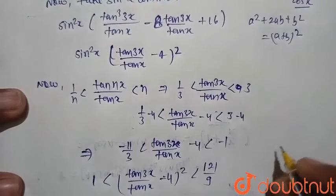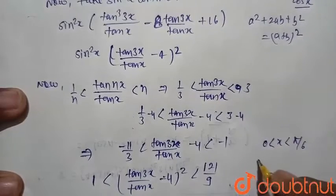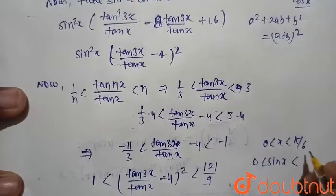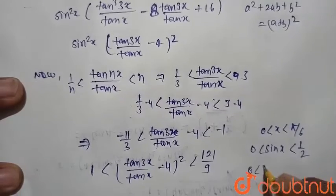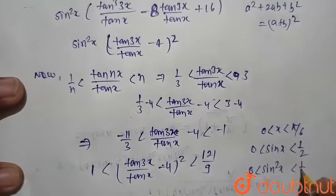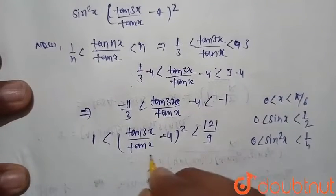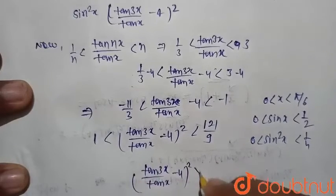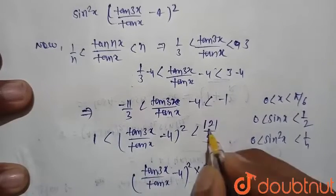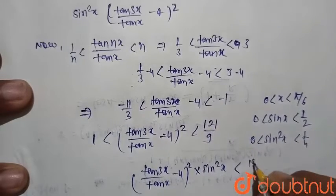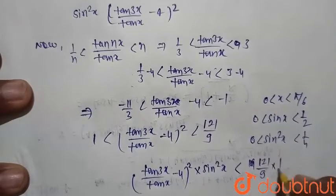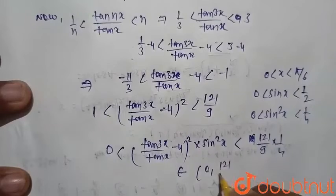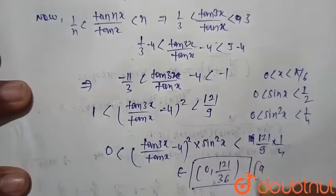Now, we are given x lies between 0 to π/6, so sin(x) lies between 0 and sin(π/6), and sin(π/6) equals 1/2. So sin²x lies between 0 and 1/4. Combining both results, sin²x multiplied by [tan(3x)/tan(x) minus 4]² lies between 0 and 121/9 times 1/4, which gives the interval 0 to 121/36. Therefore option A is correct.